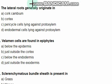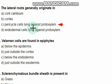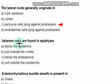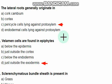The lateral root generally originates in — the right option is option C: pericycle lying against protoxylem. Next: Velamen cells are found — the right option is option D, just outside the exodermis.